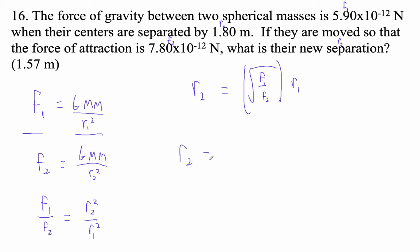So R2 is going to be the square root of, and we know that it's got to be a little bit closer. So I'm going to go 5.9 over 7.8. And then our initial radius was 1.8. Now, I know without a doubt that it's got to be closer because it's a bigger force, therefore it's closer. So I really am not paying attention to the R1s and R2s. I'm just putting the small number on top, big number on the bottom.